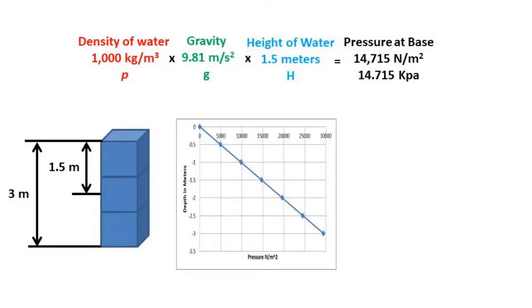Hydrostatic pressure can be found by taking the density of the water times gravity times the height of the water. Being that we want to find the pressure halfway down, we are using the height of 1.5 meters. After we plug in all of our numbers into the formula, we get an answer of 14,715 newtons per meter squared average pressure on the dam.